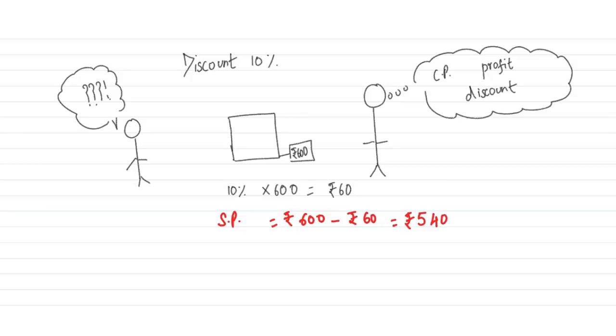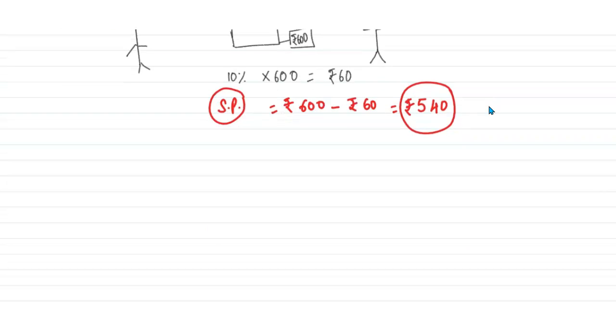This he can calculate and he can just pay ₹540 and go. But the shopkeeper knows he's earning a profit of 25%. And since now we also know the SP which is ₹540, and the shopkeeper also knows the SP, we have to find out the cost price. Always CP is taken as 100. This is CP.